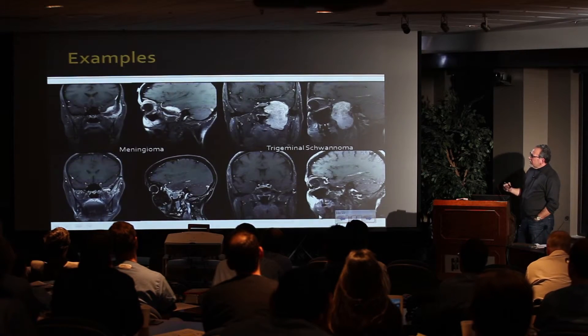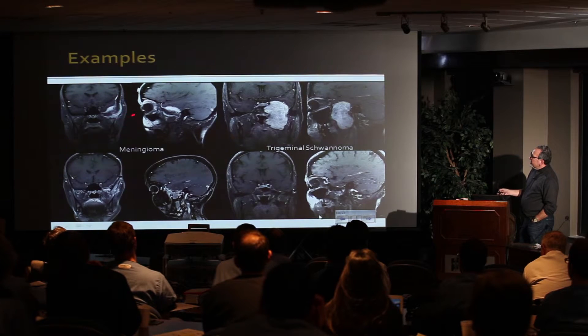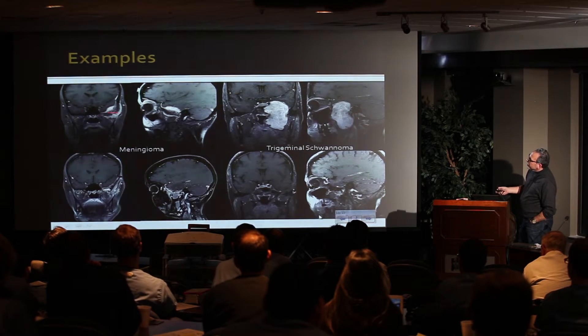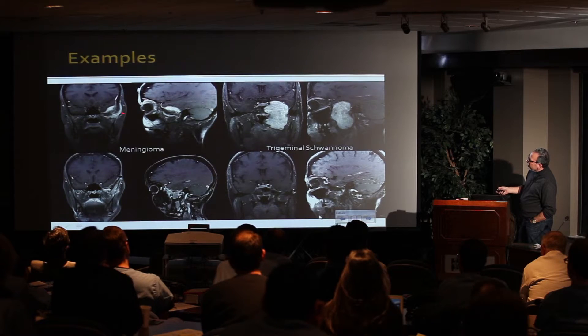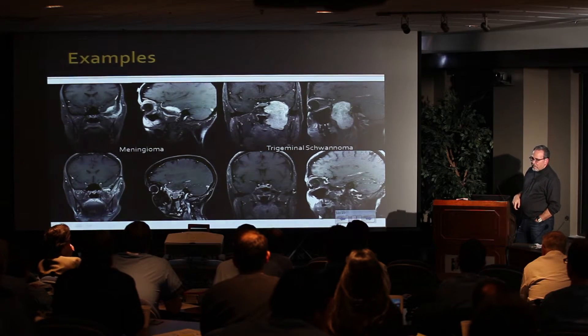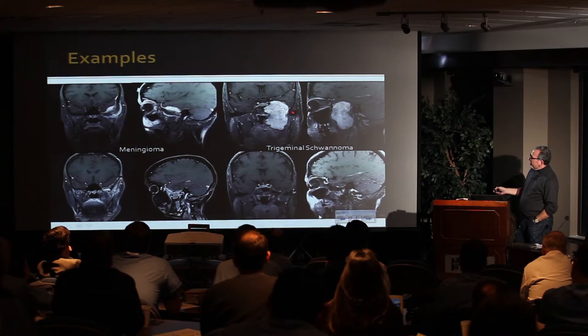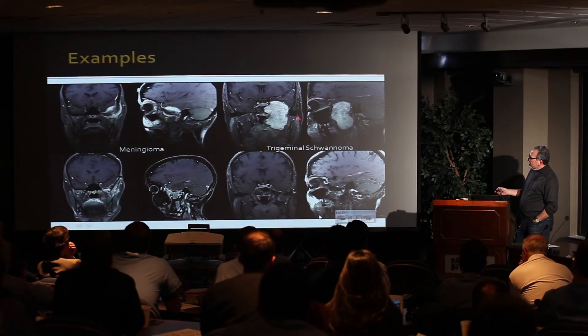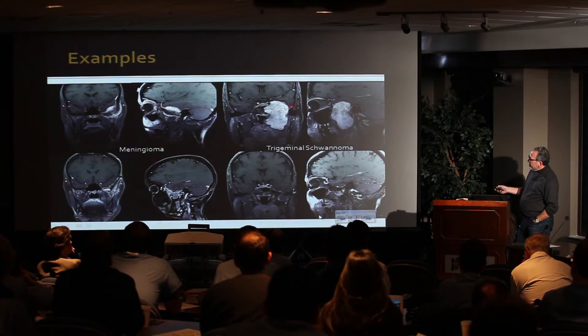As we get to more complex tumors, the exposure really is the same. You can see where this meningioma is sitting — the zygomatic arch just needs to come down a little bit so we get the temporalis muscle out of the way, giving us a direct lateral approach to the tumor. This is a trigeminal schwannoma from the mandibular division. Just moving the zygomatic arch gets you into the tumor. You don't need a craniotomy — just move a centimeter and a half of bone and you have the entire tumor in your surgical field.